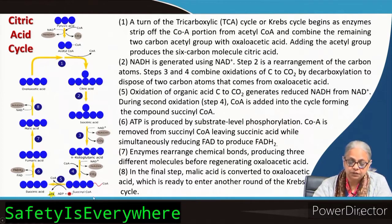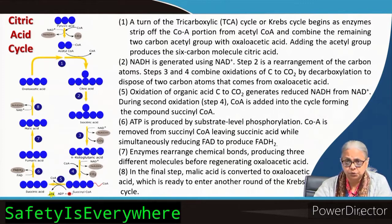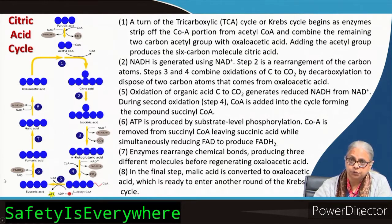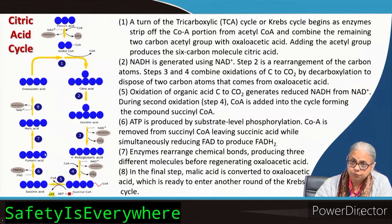Alpha-ketoglutaric acid loses another CO2 and coenzyme A attaches to form succinyl-CoA; NAD+ is again converted to NADH. Succinyl-CoA then utilizes ADP plus phosphate to generate ATP and release coenzyme A back into solution, forming succinic acid — this is substrate level phosphorylation. In the next step, FAD+ is converted to FADH and succinic acid is converted to fumaric acid.